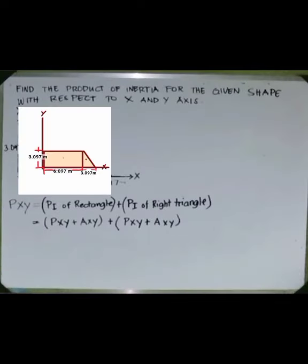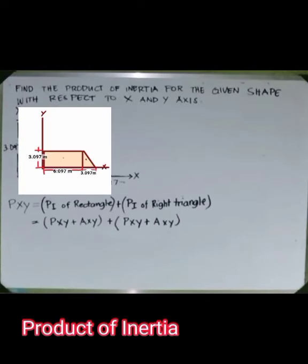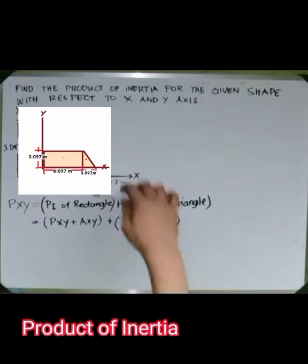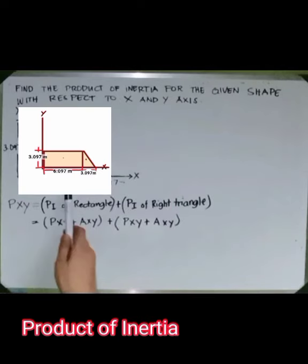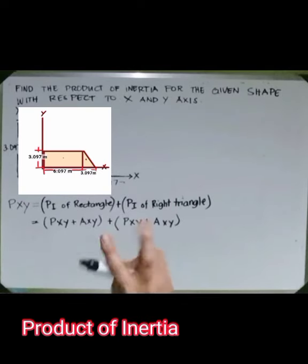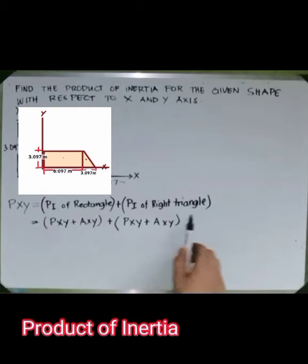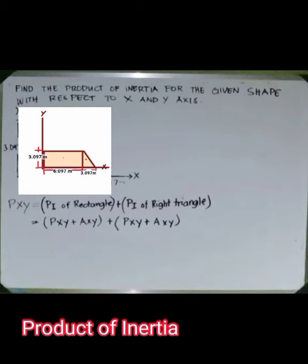Find the product of inertia for the given shape with respect to the x and y axes using a shortcut method. Dimensions are in meters. The shape is cut into two parts: a rectangle and a triangle. The total product of inertia equals the product of inertia of the rectangle plus that of the right triangle.